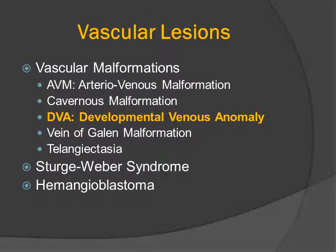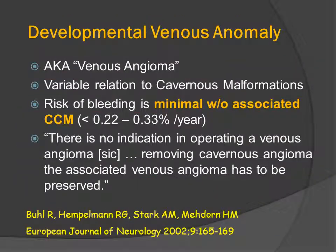Developmental venous anomalies are also called venous angiomas. They have a variable relationship to cerebral cavernous malformations. The risk of bleeding in these lesions is minimal without an associated CCM. There is no indication for operating on a venous angioma. If there is an associated cavernous malformation, that should be resected separately.